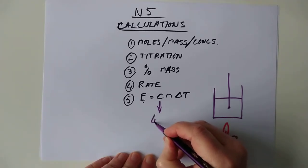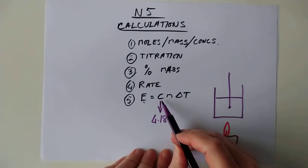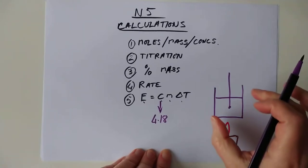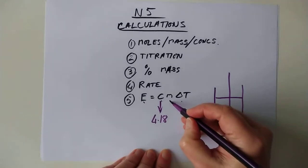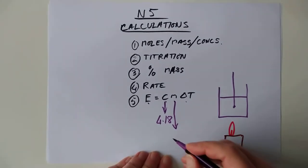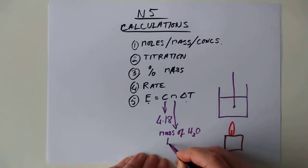So C is to do with the nature of this water. It's in your data book, and its value is 4.18. In fact, all of these three terms are all to do with the water. M is the mass of the water. Slight pain, it's got to be in kilograms.